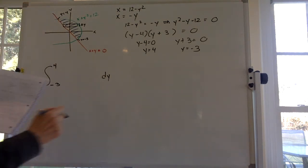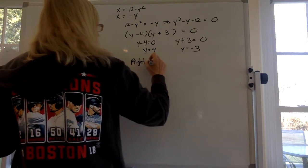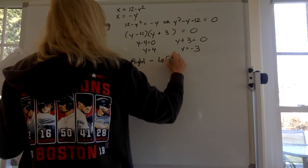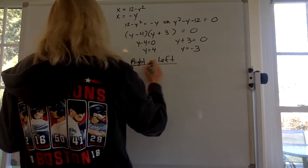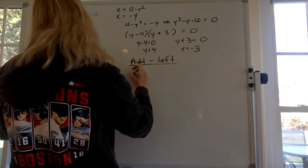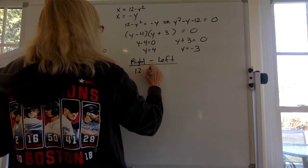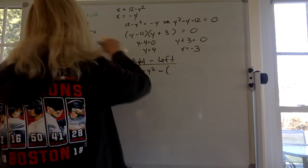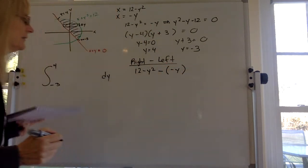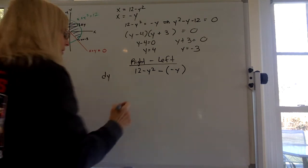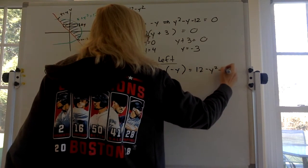So what do we got to do? We got to do, remember I said we had to do the right minus the left, the right function minus the left function to get that area. So what is the right function? The right function is 12 minus y squared minus, what is the left function? The left function is minus y. So I think that's gonna be 12 minus y squared plus y.